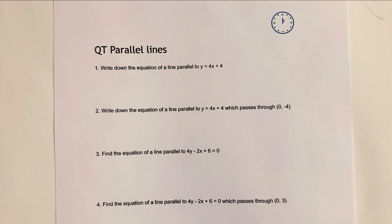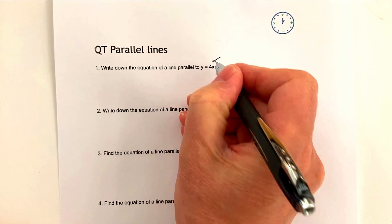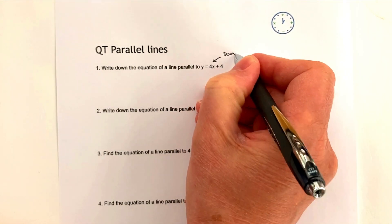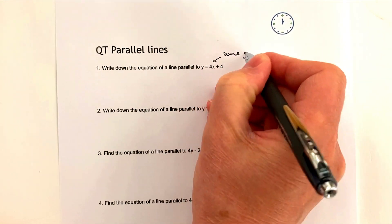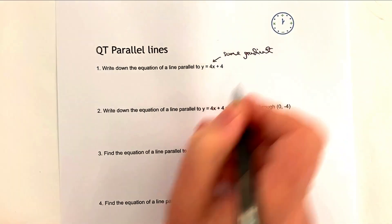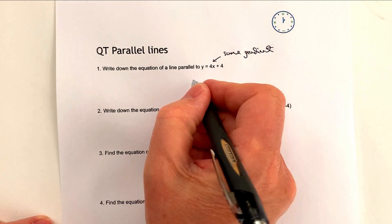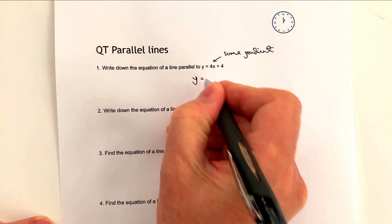It says: write down the equation of a line parallel to y = 4x + 4. Really, all we mean is that parallel means the same gradient. The gradient on this particular line is 4, so if you're going to write a parallel line it would be something like y = 4x...